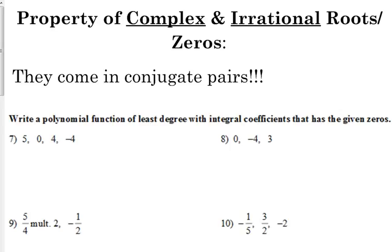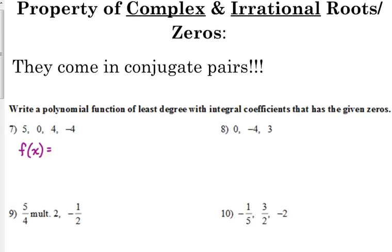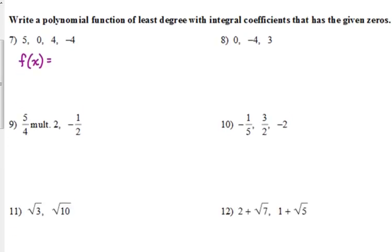You can write y equals, let's go with f of x. I like to use function notation because that comes up more often later down the road. Now anytime there's a zero, I like to put that one first. So x minus zero. Well, we know subtracting zero really doesn't change it. We'll fix that here in a second. And then x minus five, x minus four, and x minus negative four.